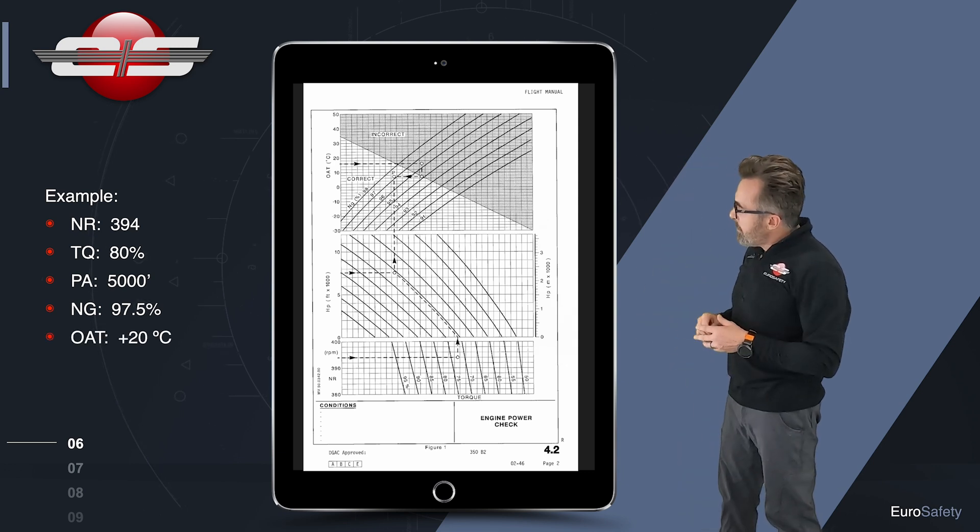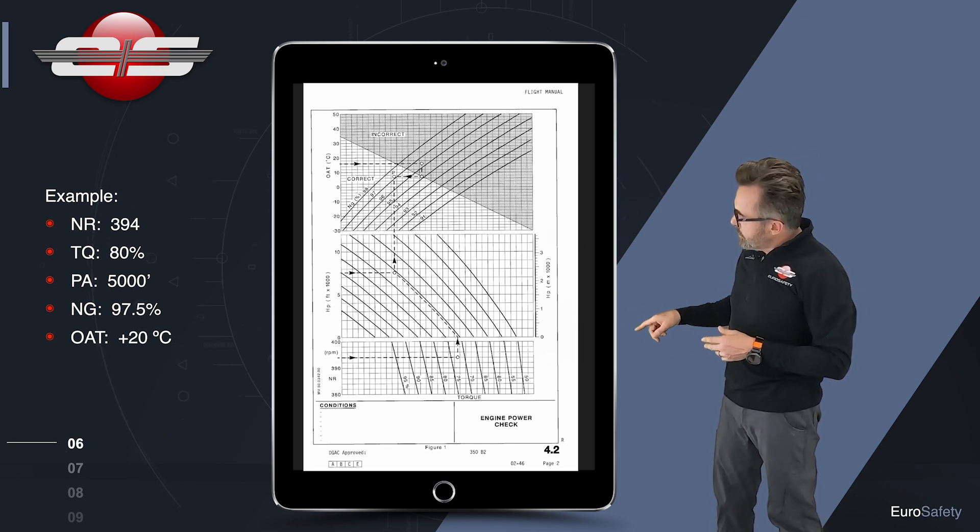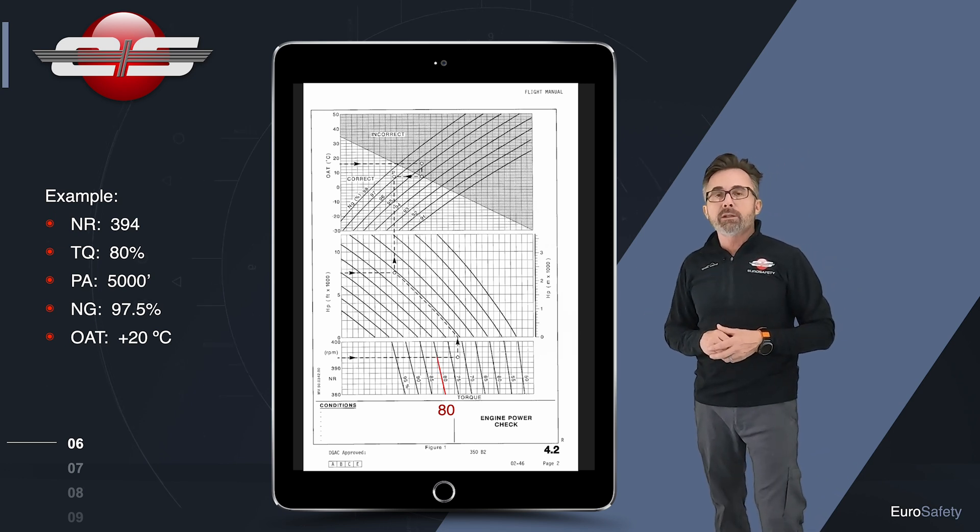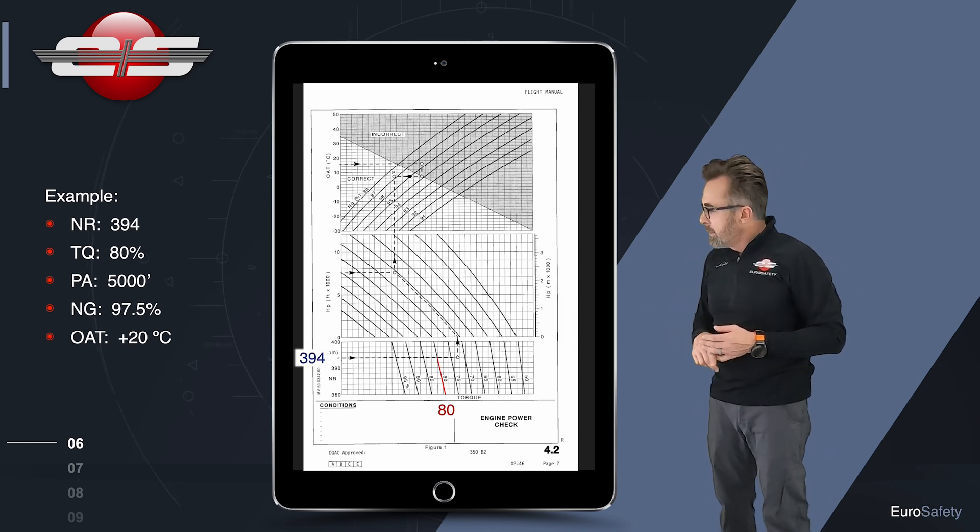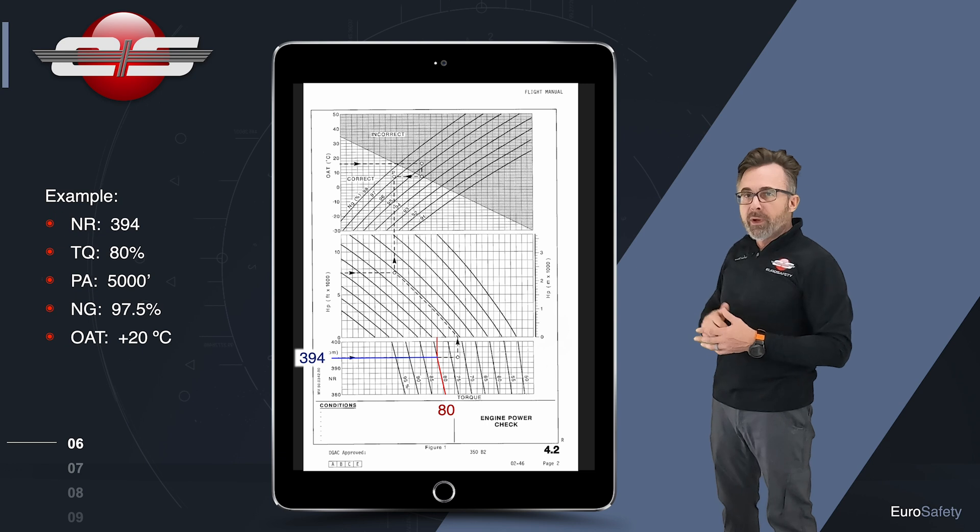Now, right off the bat, it's a little bit confusing on the bottom because we have these diagonal lines. What we're going to do is we're going to find our torque value and follow that diagonal line until we get to our NR. So we intersect those two points, and then we're going to draw a line straight up to the next chart above that.